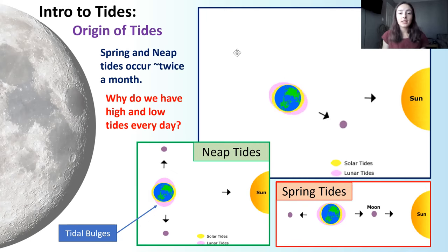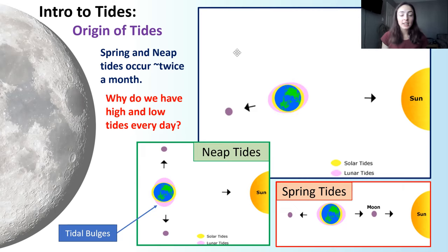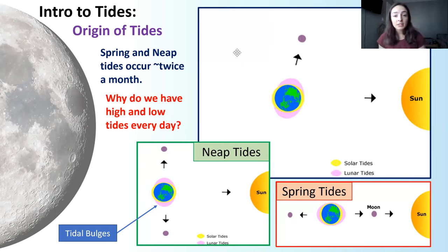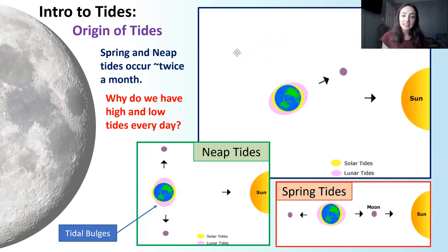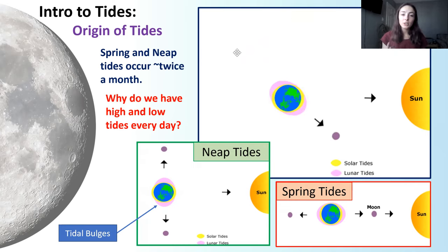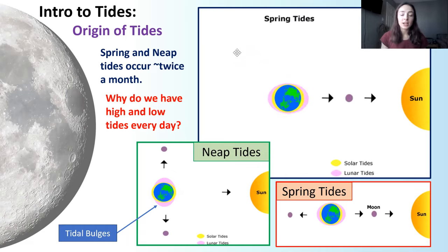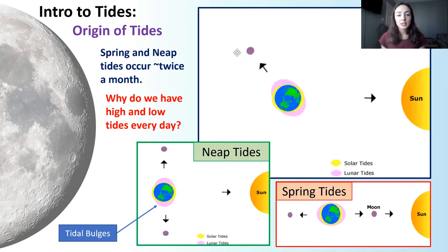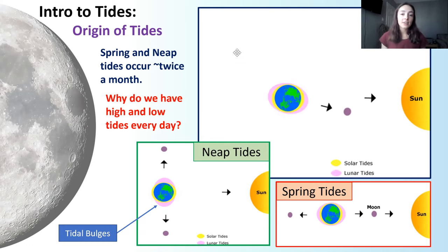This explains the difference in tidal range a couple of times a month, but it doesn't explain why we have high and low tide every day. While we're looking at the sun's and moon's effects on earth, what about earth's effect on itself? Earth is not staying still — it is rotating on its axis. Because of this rotation, earth rotates under the tidal bulge, so the tidal bulge will be in a different location on earth depending on earth's rotation at the moment. Earth's rotation causes the high and low tides that we see every single day.